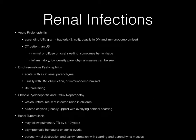Acute pyelonephritis is usually seen in diabetics and involves an ascending UTI with gram-negative bacteria such as E. coli. CT is usually best for visualizing this; findings can reflect normal kidneys or demonstrate diffuse or focal swelling, and hemorrhage can sometimes be present. Emphysematous pyelonephritis is an acute, life-threatening condition with air typically seen in the renal parenchyma, usually in patients with diabetes mellitus, obstruction, or in immunocompromised patients.